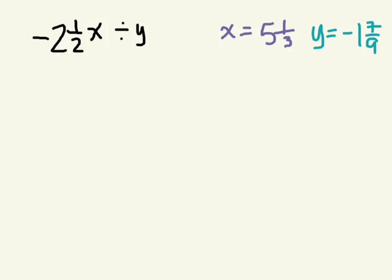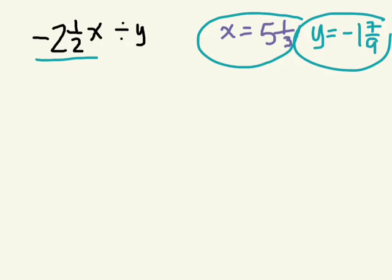Okay, in this example, we're looking at calculating negative 2 and a half x. So what operation is that? Negative 2 and a half x. What operation is that? Multiply. So negative 2 and a half times something, which is given here, divided by something, which is also given. What do we do with that given information? Plug it in. Good.